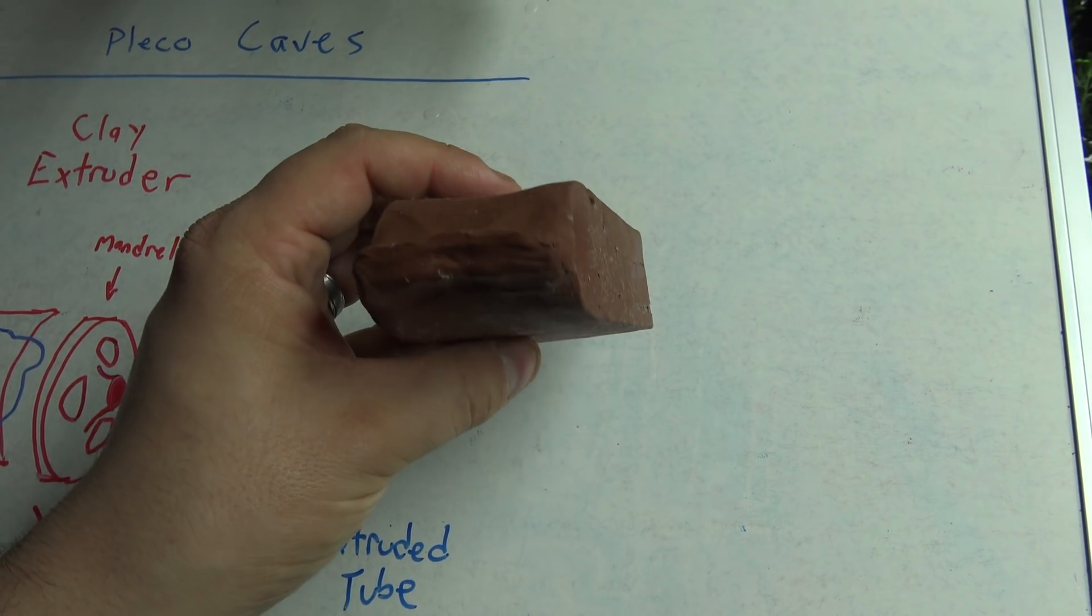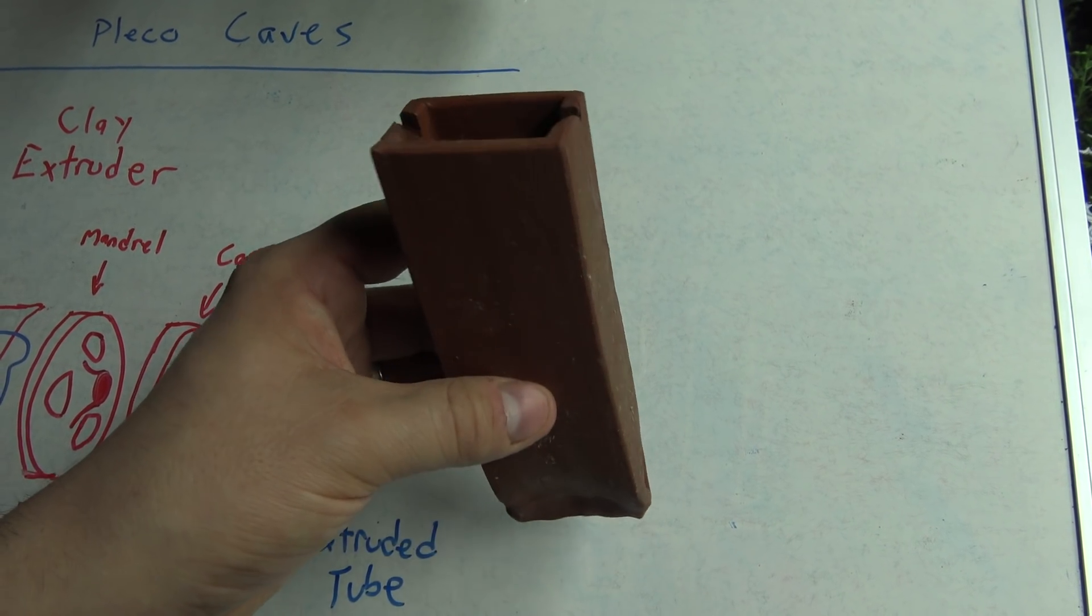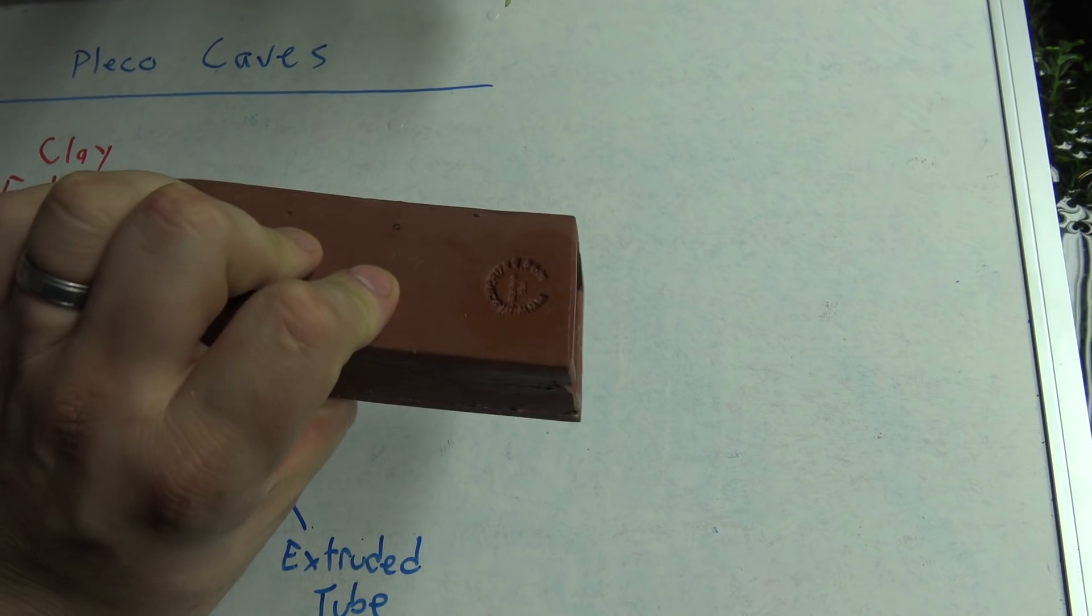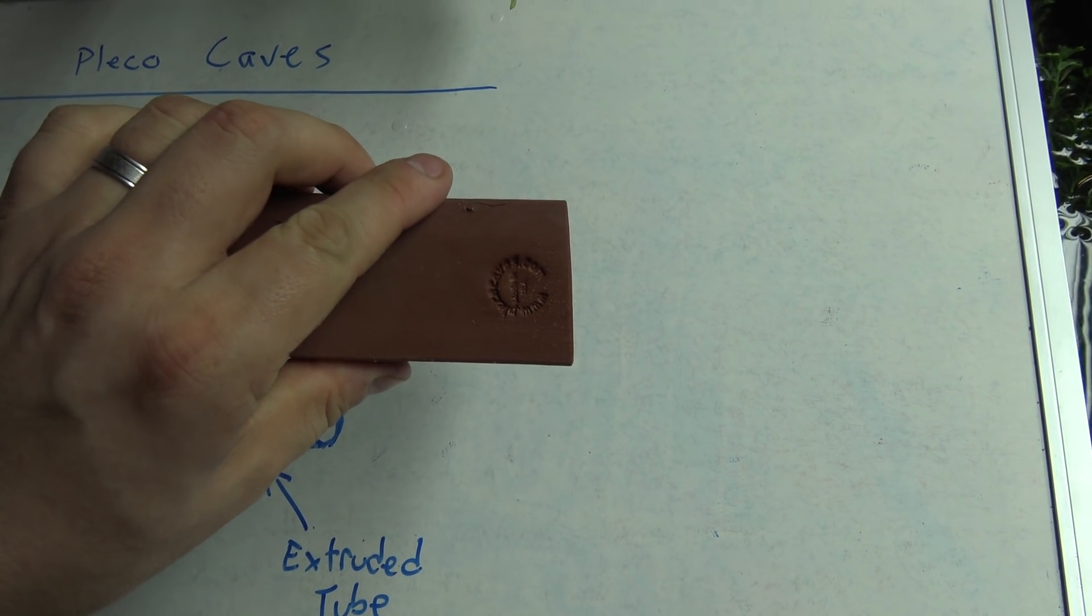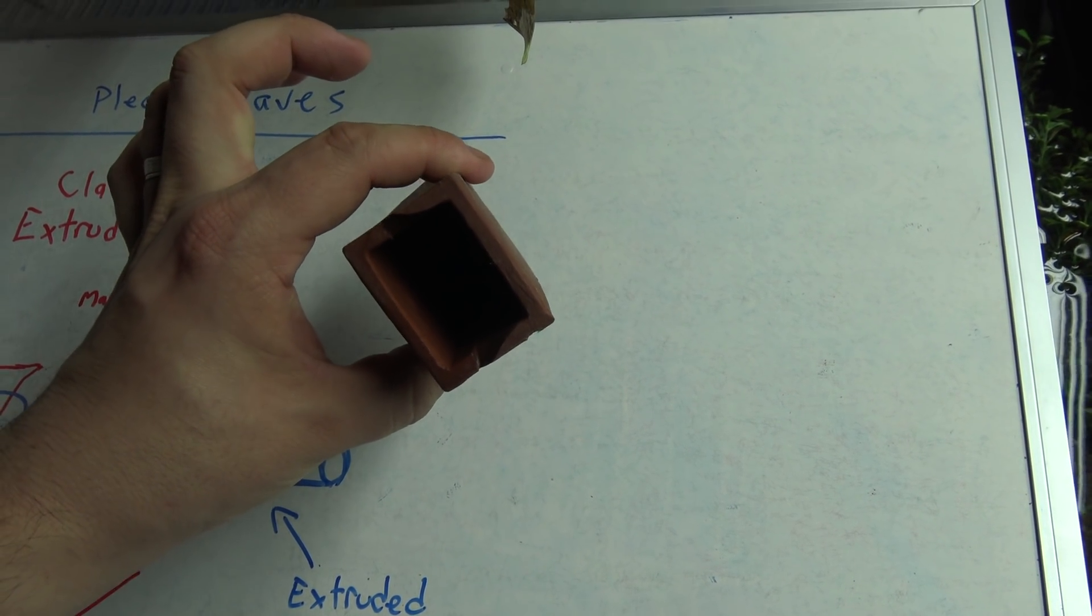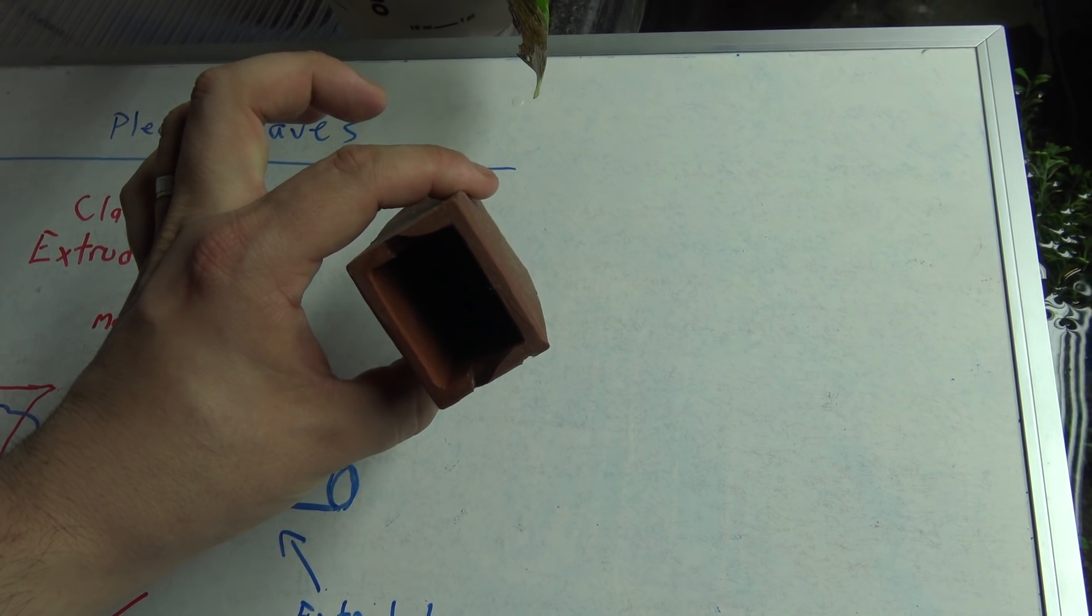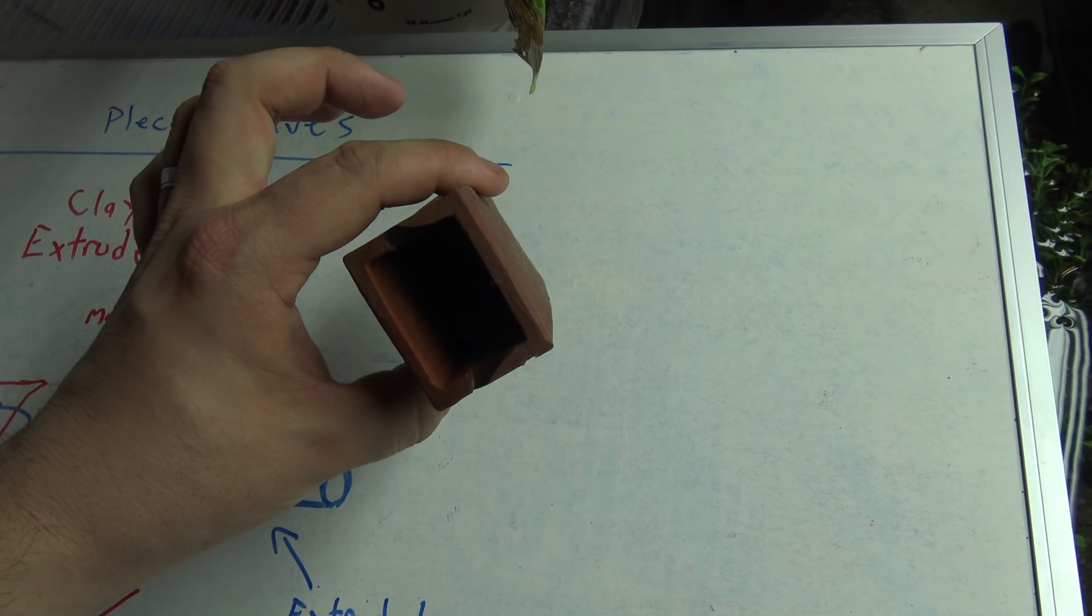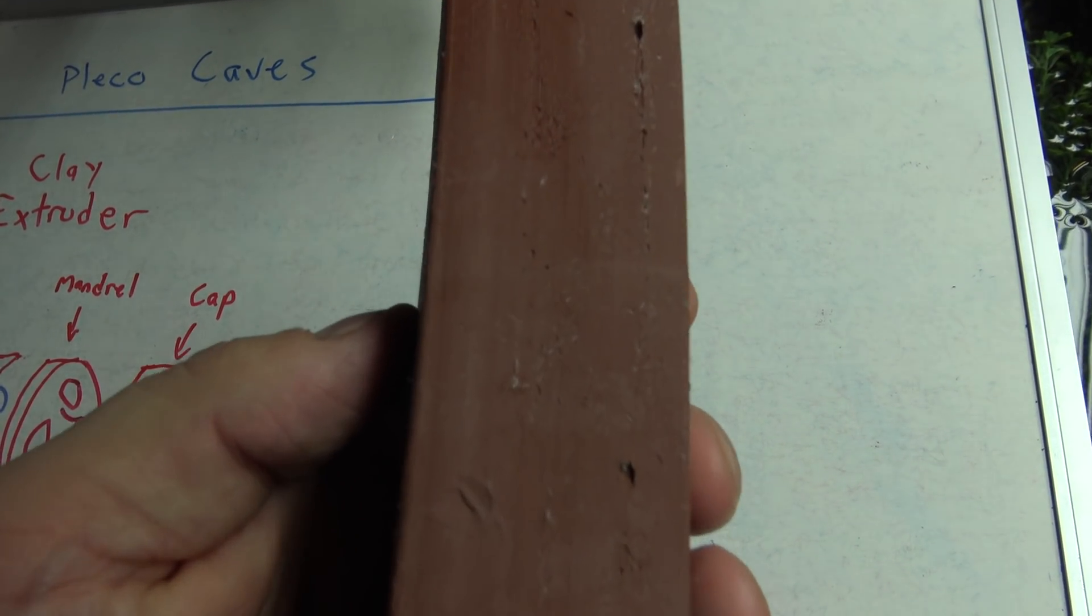But if we very slowly turn this around, what you'll notice is that the end here is sort of chopped off at a weird angle. You can see it sort of at an angle there. And if we look down it, you can see that it's got a curve to it. It's like it spiraled a little bit while it was being constructed. And there's very good reasons for that.